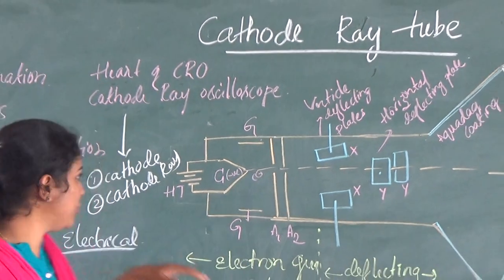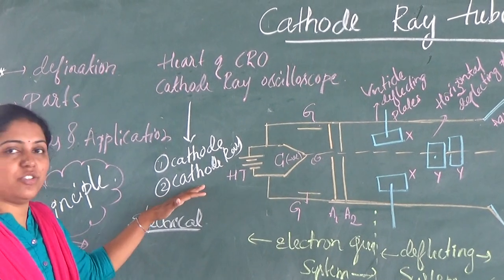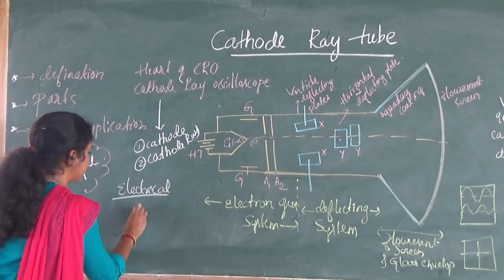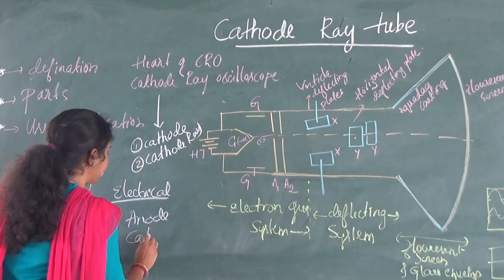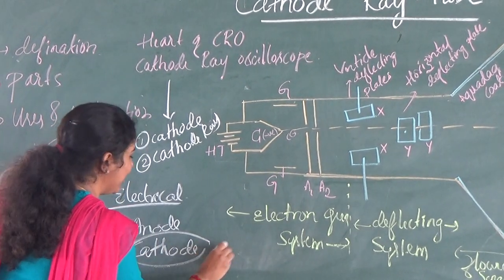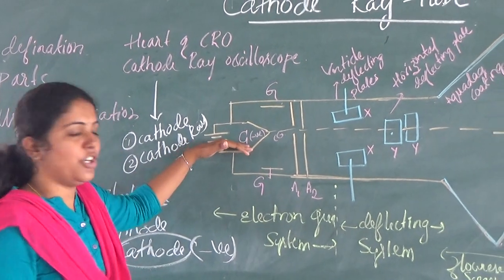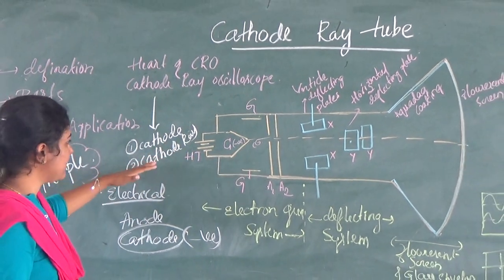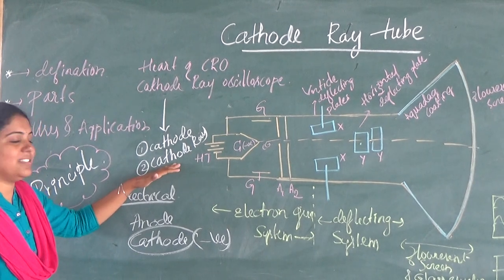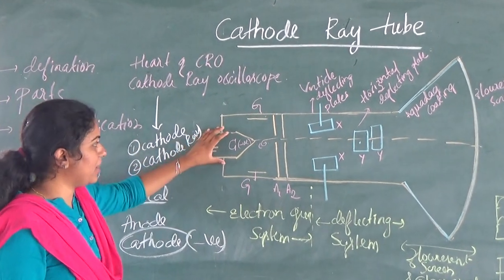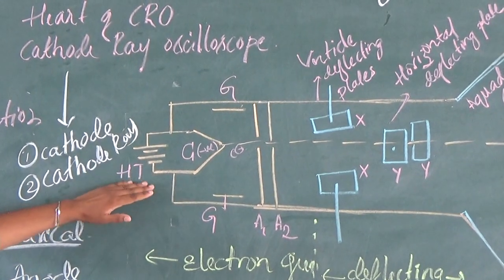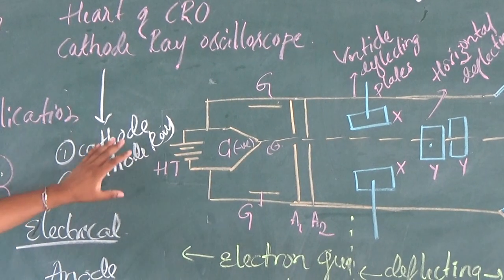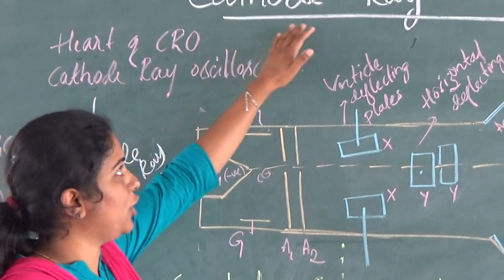Before going to the topic, we should know what is cathode and what is cathode ray. There are two types of electrodes: anode and cathode. The cathode has negative charge. Here we have a metal which will emit a beam of electrons — what we call cathode rays. Cathode rays are nothing but the beam of electrons coming from some metal, by giving a high tension supply so that this metal acts as cathode.